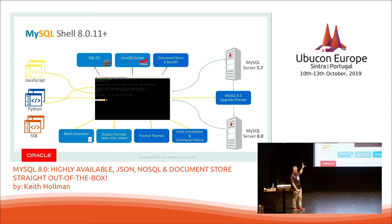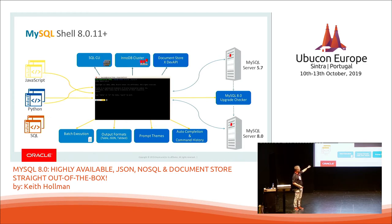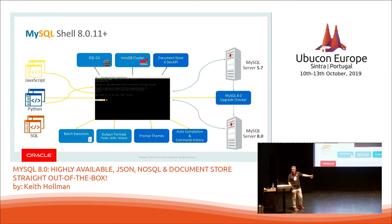MySQL Shell — we used it in InnoDB cluster to create our cluster, but at the same time you can see JavaScript, Python, SQL within the same session. You've got the SQL command line interface for InnoDB cluster, got our XDEV API. We've got an upgrade checker that takes us from 5.7 to 8.0, gives us all the information about what's happening in my instance — is 5.7 okay to go to 8, yes or no, this is what you need to change. It's a command line, so we can use batch execution and get output in different formats — table, JSON, tab. We can change the prompts to different pretty colours, and there's completion and command history.